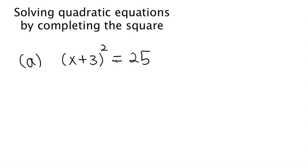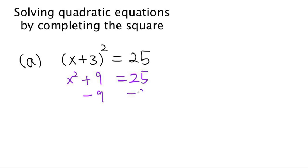We have x plus 3 squared equals 25. I'm going to show you how to solve this problem in the wrong way first — I have seen people doing this many times. So why don't we just take the square of both terms: take x squared and take 3 squared, which is 9, and that's going to be equal to 25. Subtract 9 from both sides, get x squared equals 16, so x is square root of 16, which is 4.